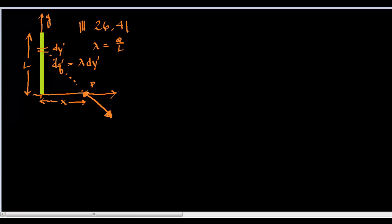The electric field at this point caused by dy, which we'll call dE — for the moment we're looking at just the magnitude — equals k dq over r squared. The distance r squared is x squared plus y squared. And this is dq, not q, so we write dq as lambda dy, because we're looking at the charge from this little sliver.